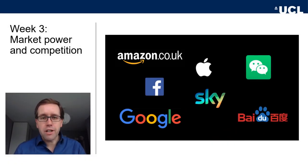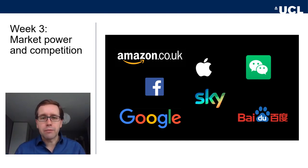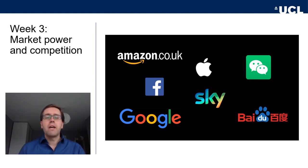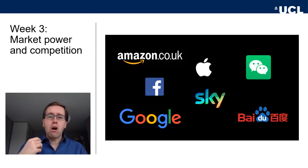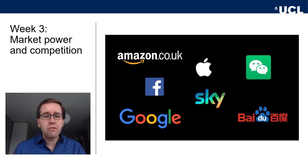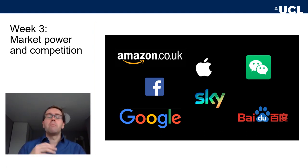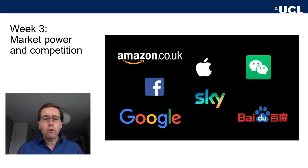What do all these companies have in common? They have a huge market share. I'm sure all of us have used Amazon to order things like a book online. All of us have Googled something on the internet, searched for something using Google search engine. Almost everyone has a Facebook account. If you're in China, maybe you don't because of censorship, but there's Baidu and WeChat, and this is used by everyone.